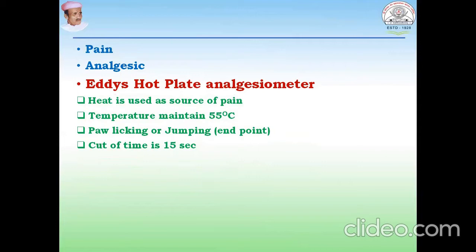The temperature which is maintained is 55 degrees centigrade, because it is the standard temperature. If we increase the temperature beyond that, there is a chance of damage to the paw of the animal. Here we can observe two types of response: first is paw licking, and second is the animal jumping. These two responses are the endpoints of the activity.